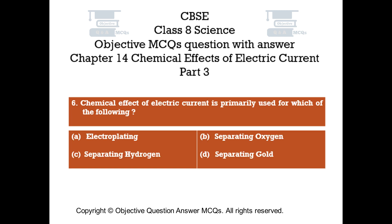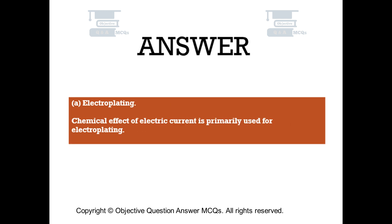Question number 6. The chemical effect of electric current is primarily used for which of the following? Option A: Electroplating. Option B: Separating oxygen. Option C: Separating hydrogen. Option D: Separating gold. The right answer is Option A: Electroplating. The chemical effect of electric current is primarily used for electroplating.